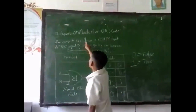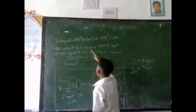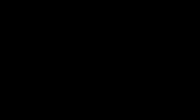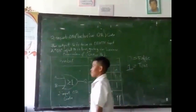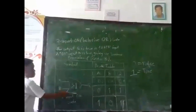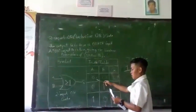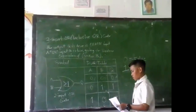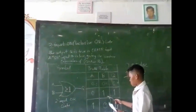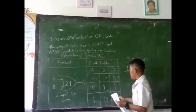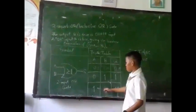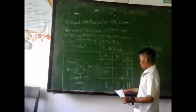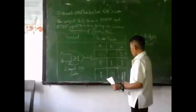Two input exclusive OR gate — the output U is true if either input A or input B is true, giving the boolean expression of A XOR B. If input 0 and 0, output is 0. If input 0 and 1, output is 1. If input 1 and 0, output is 1.